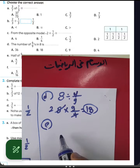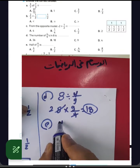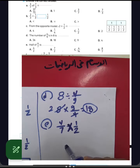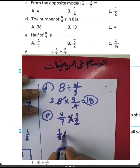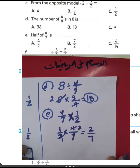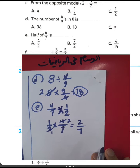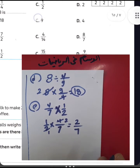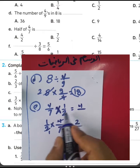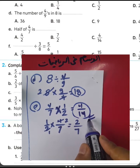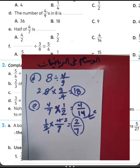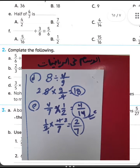For letter E, 'half of 4/7' means half multiplied by 4/7. You write 1/2 times 4/7. Divide: 4 divided by 2 equals 2, and 1 times 2 equals 2, then 1 times 7 equals 7, giving 2/7. Alternatively, write 4/14, then simplify by dividing numerator and denominator by 2 to get 2/7. Choose letter C.